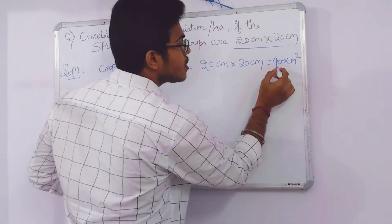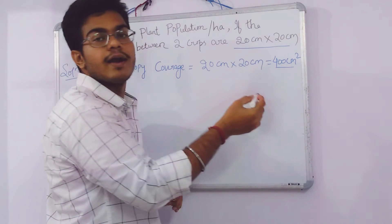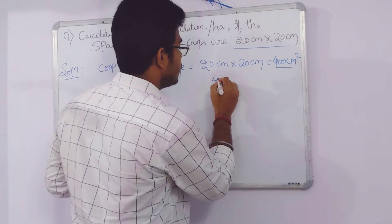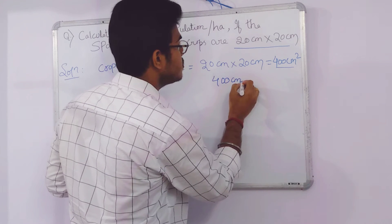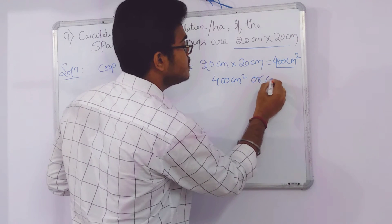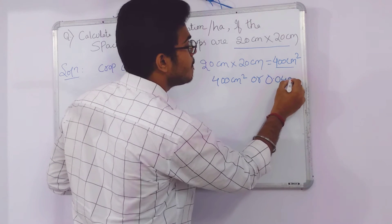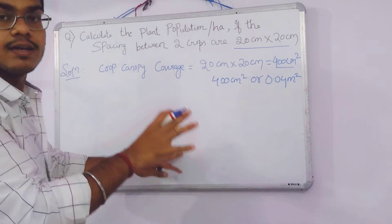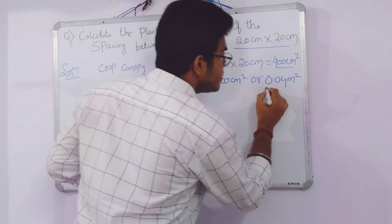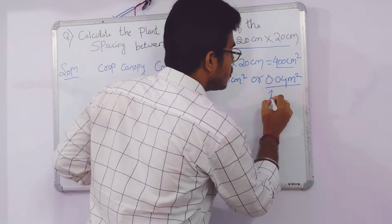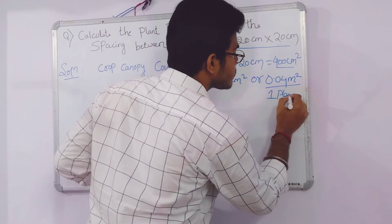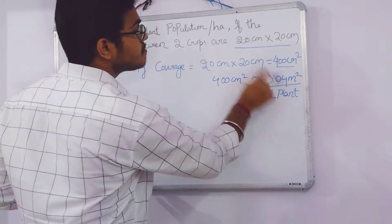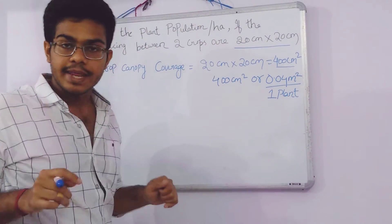We have to convert 400 centimeters square into meters square. 400 centimeters square equals 0.04 meters square. This says that 0.04 meters square is the area for one plant — it means one plant covers this much amount of area.